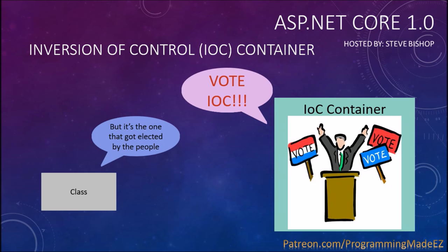That last line from the skit — 'the one that got elected by the people' — is actually true. It was elected through the way that ASP.NET Core was built through open source, because it's an open source community in ASP.NET Core. So it's really the one that the people decided was the best solution for this particular problem.